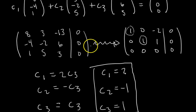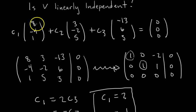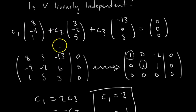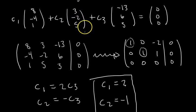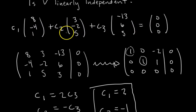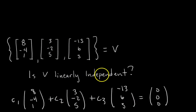We can verify: C1 equals 2, C2 equals negative 1, C3 equals 1. Check the first component: 2 times 8 is 16, minus 3 is 13, plus 1 times negative 13 is 0. It works for all three components. We've written a linear dependence relation, so the set V is linearly dependent — not linearly independent. The answer is no, it's not linearly independent.